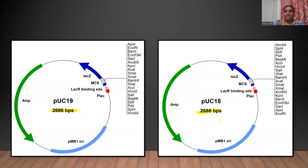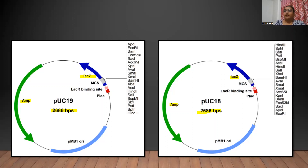Both of these plasmids have two selectable markers. The first one is the ampicillin-resistant gene, and the second one is the lacZα. For cloning purposes, the second marker — the lacZα — is used.